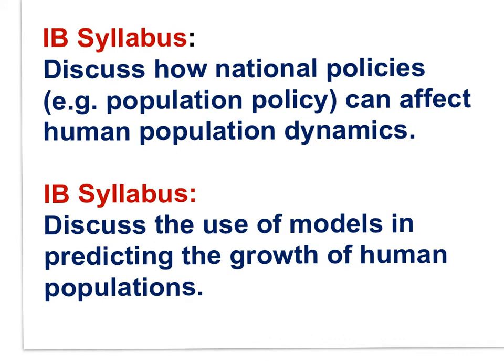As we dig into the demographic transition model, discuss how national policies, such as a population policy, can affect human population dynamics and growth, and discuss the use of models in predicting the growth of human populations. Demographic transition theory is a model that suggests all populations pass through predictable stages as they develop. As a model, it allows us to compare the development of any country against the model to understand a country's status. As a predictor of growth, the model might encourage governments to implement policy to facilitate change. However, demographic transition theory is limited, as it assumes all countries proceed through the stages as given.